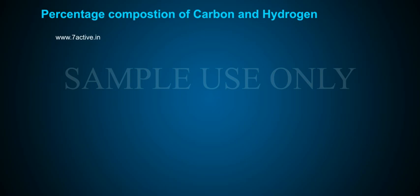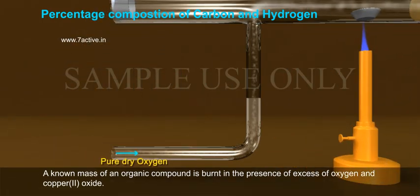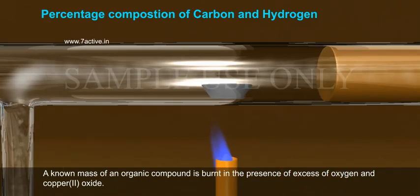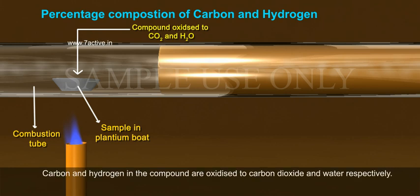Percentage composition of carbon and hydrogen. A known mass of an organic compound is burned in the presence of excess of oxygen and copper oxide. Carbon and hydrogen in the compound are oxidized to carbon dioxide and water respectively.